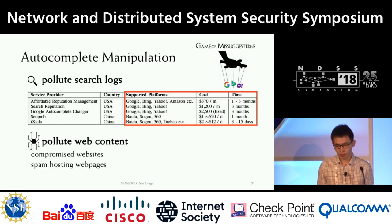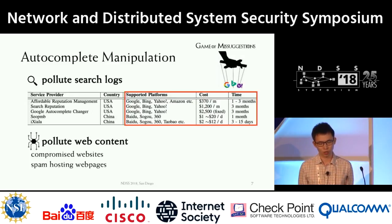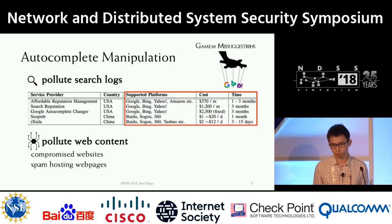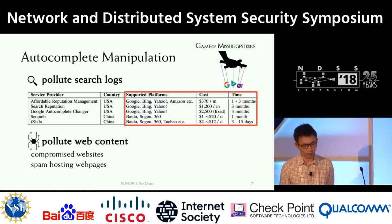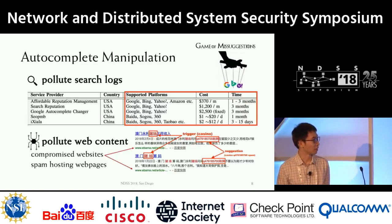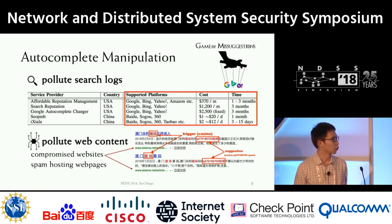The other type of manipulation is to pollute the content of the web. Here is an example of suggestions which are generated from web content.